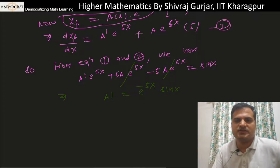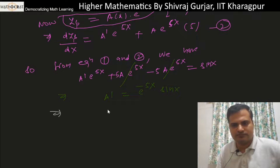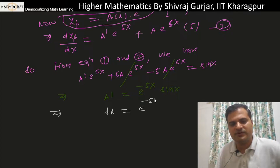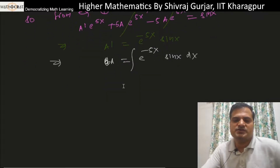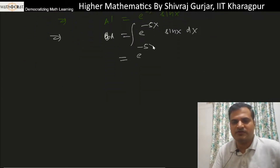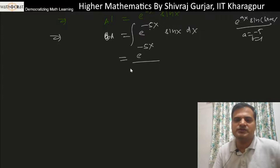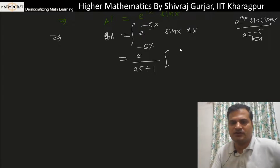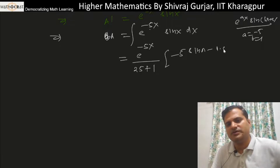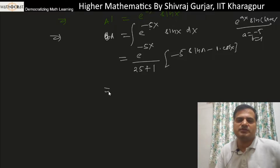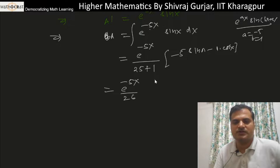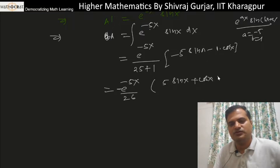So da/dx = e^(−5x)·sin x. Integrating using the formula ∫e^(ax)·sin(bx) dx = e^(ax)/(a²+b²) · (a·sin x − b·cos x), with a = −5 and b = 1: a = e^(−5x)/26 · (−5·sin x − cos x), or equivalently e^(−5x)/26 · (−5 sin x − cos x).